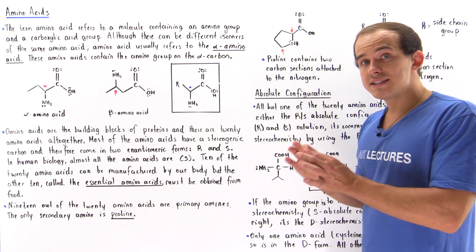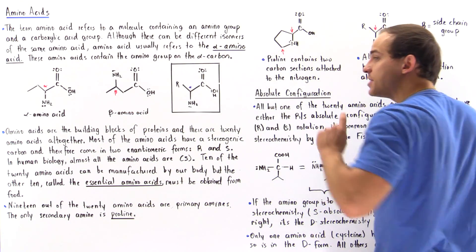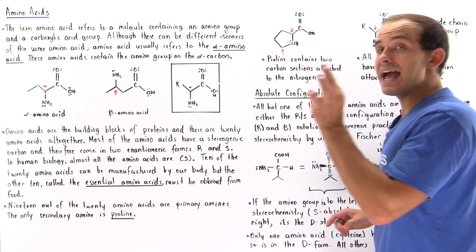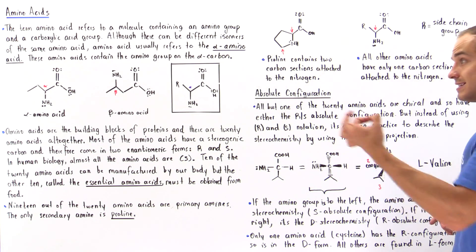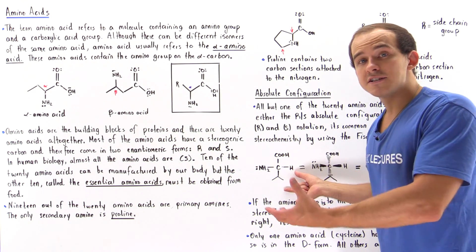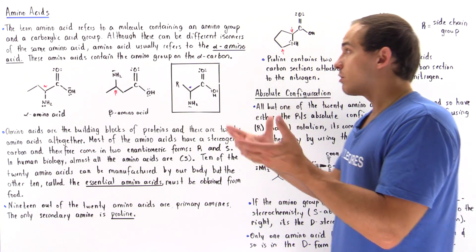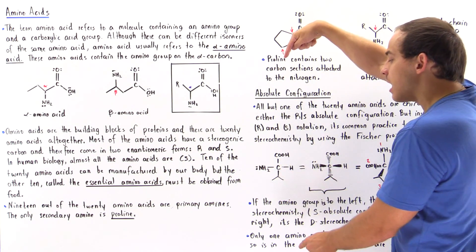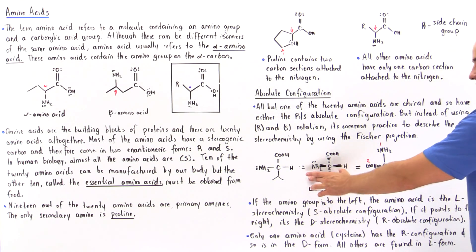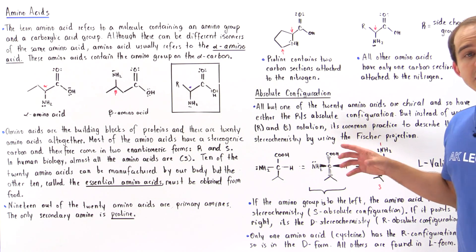For this example, the side chain used is an isopropyl group, making this the valine amino acid. The difference in stereochemistry lies in the orientation of the amino group: if the amino group points to the left, that is the L isomer; if it points to the right, that's the D isomer. In a Fischer projection, vertical lines point inward and horizontal lines point outward, which helps us visualize whether it is the S or R absolute configuration.